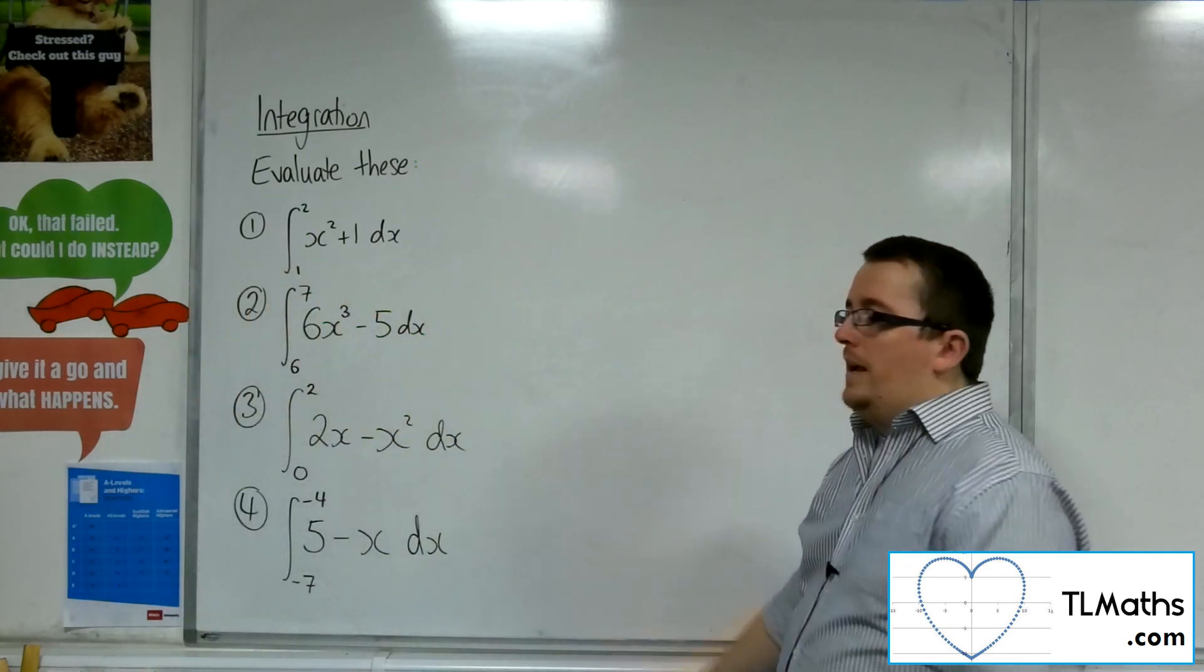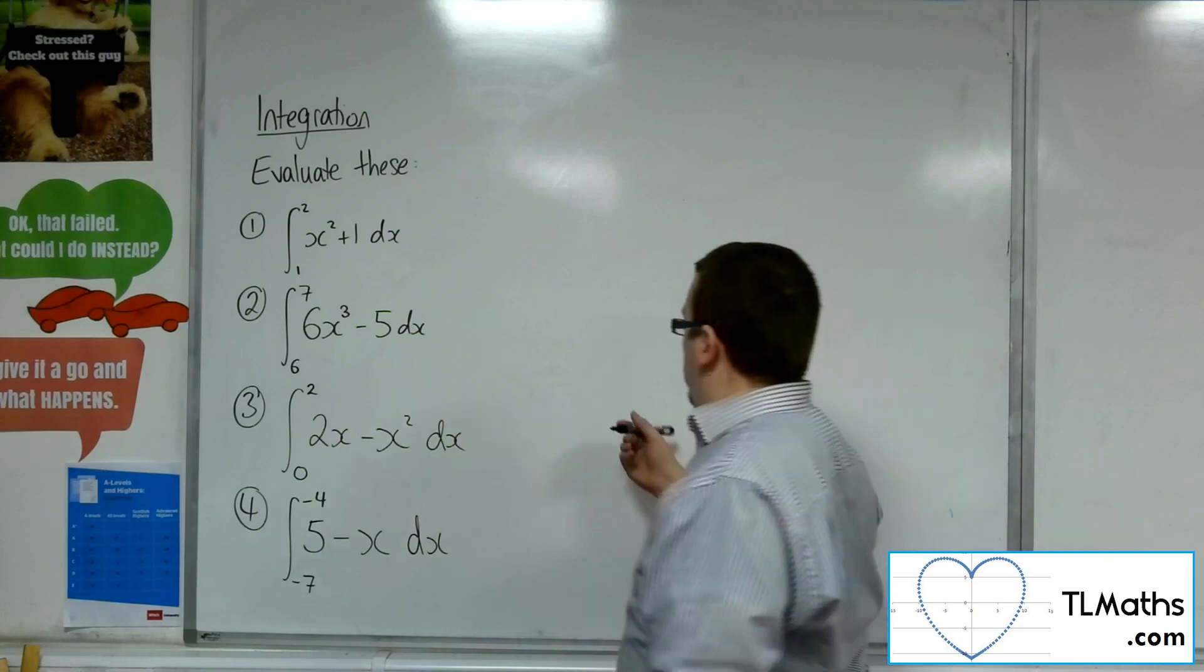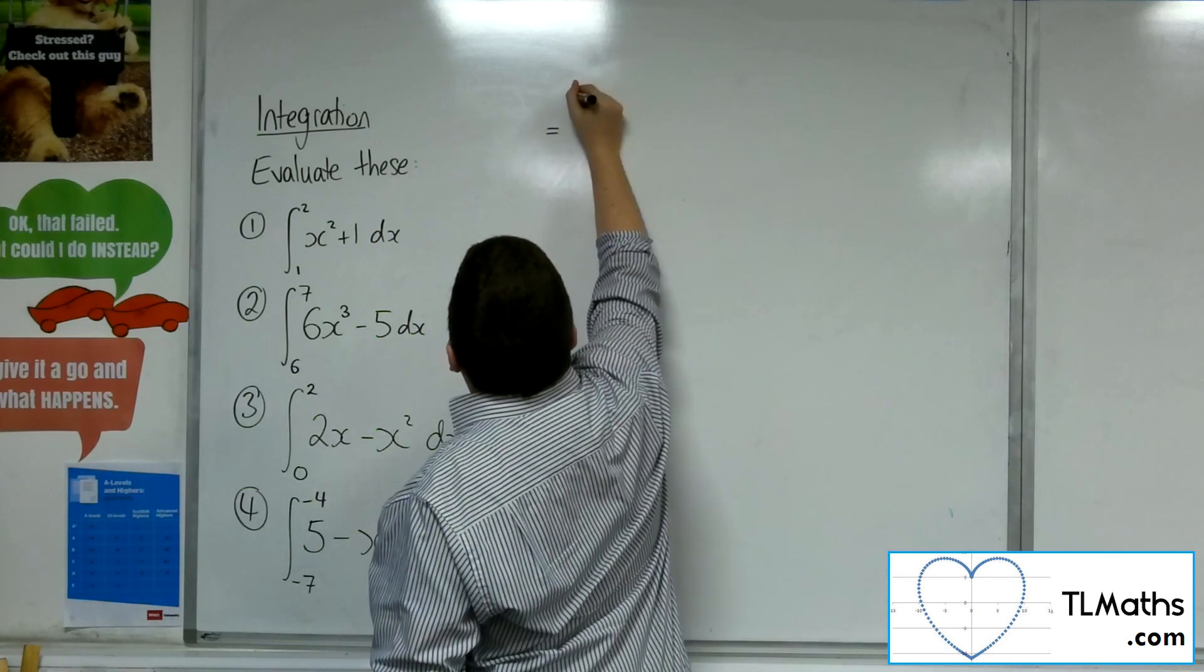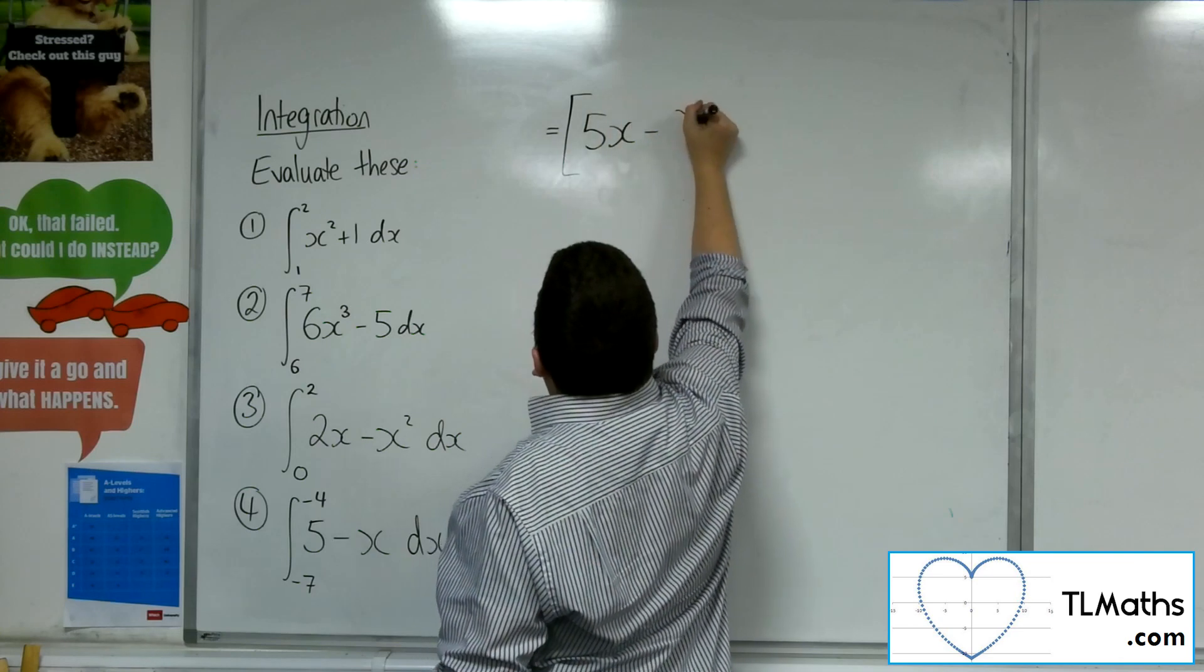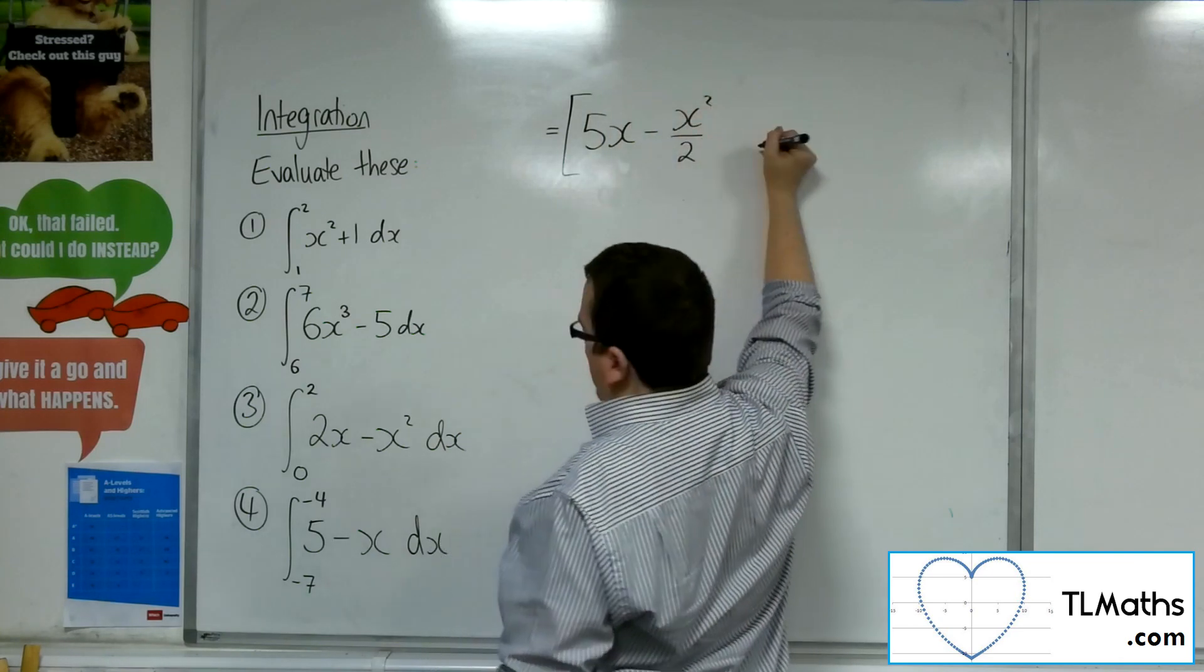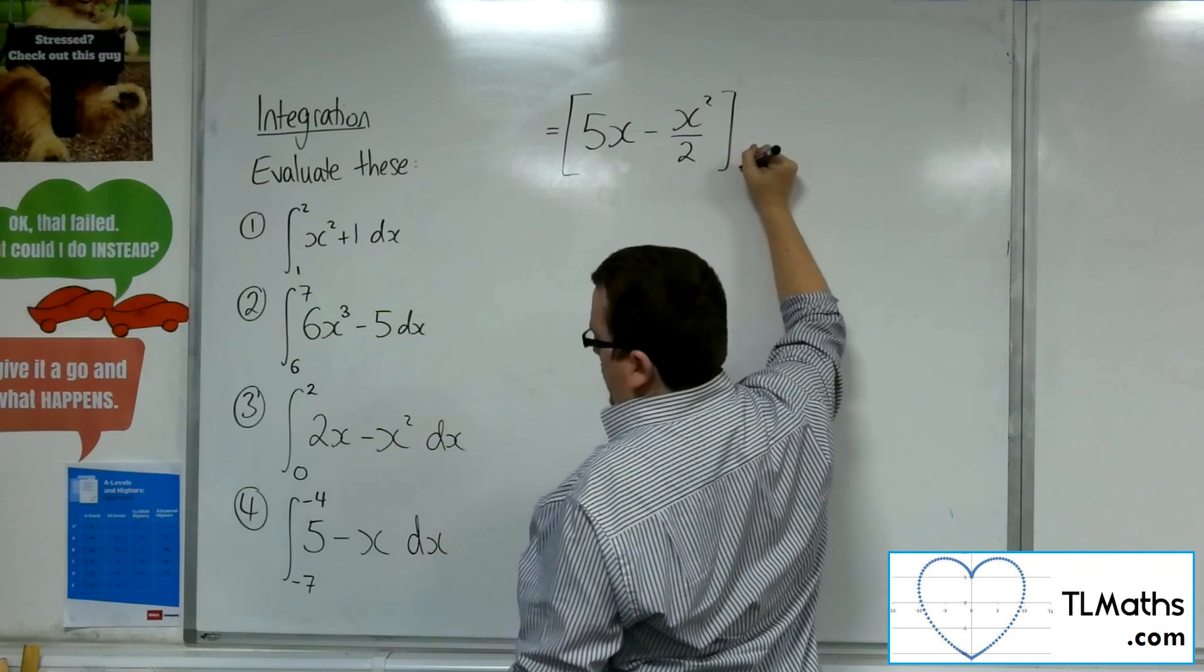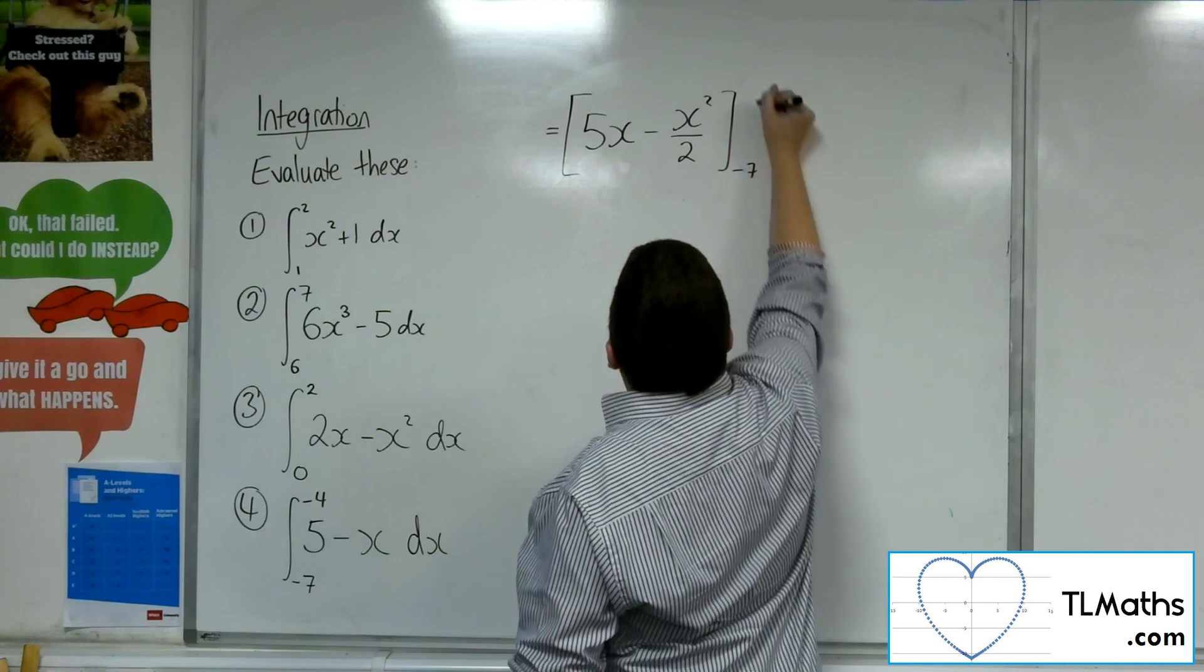Okay, let's have a look at question number 4. So next line of working. 5 integrates to 5x. Add 1 to the power, divide by the new power. And we're going to evaluate it between minus 7 and minus 4.